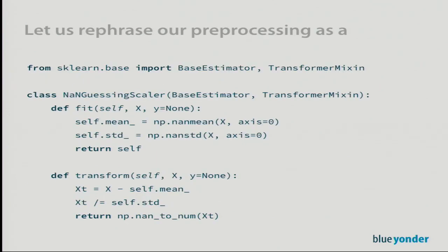We can rephrase our scaling and NaN-replacement code as a transformer. I wrote a class called NaNGuessingScaler: it implements a `fit` method that calculates and saves the column-wise means and standard deviations as object attributes. Then `transform` does the actual transformation — it subtracts the mean, divides by the standard deviation, and replaces NaN values with zero, which is the mean of the transformed data. We can then fit on training data and transform predict data in the same way.